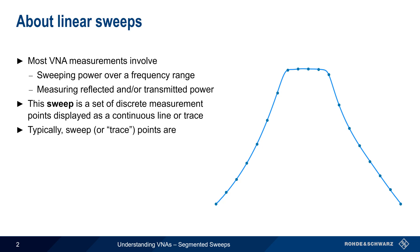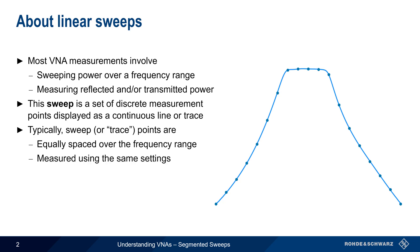Typically, the sweep or trace points are all equally spaced over the frequency range, and are all measured using the same settings, such as power, IF bandwidth, etc. Because the points are evenly spaced, these kinds of sweeps are sometimes called linear frequency sweeps.